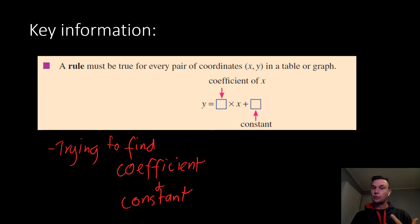The rule must be true for every pair of coordinates, so both x and y. And what we're looking for when we're finding a rule in our graph is that we're always looking for the coefficient of x - so that's the number in front of the pronumeral - and also a constant. So you'll see it'll follow this pattern. Basically, these are the two things that we're always looking for, and I'll show you how we find that.